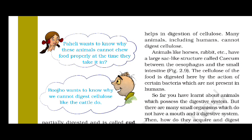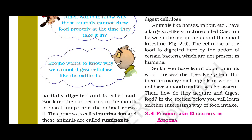Many animals, including humans, cannot digest cellulose. Animals like horses and rabbits have a large sac-like structure called the cecum, located between the esophagus and the small intestine. The cellulose in food is digested here by the action of certain bacteria, which are not present in humans.